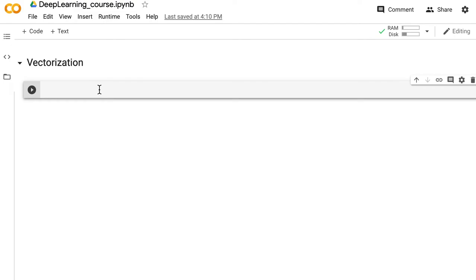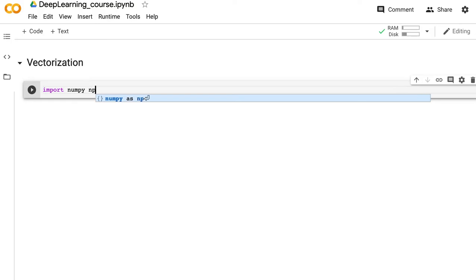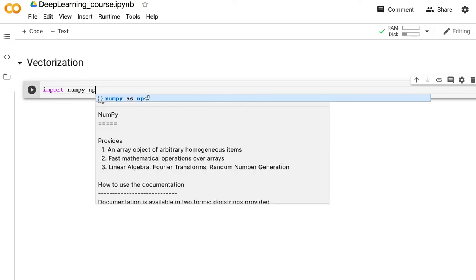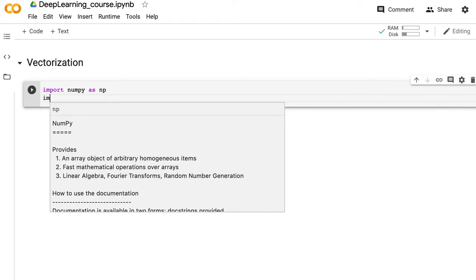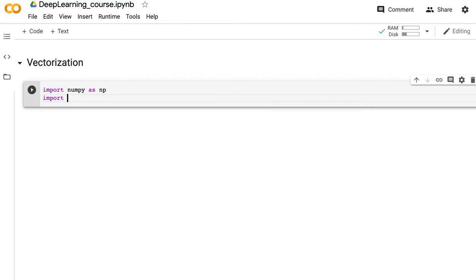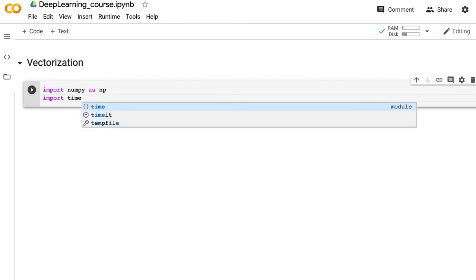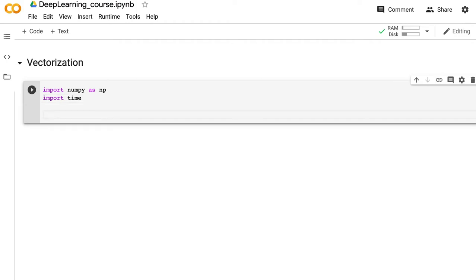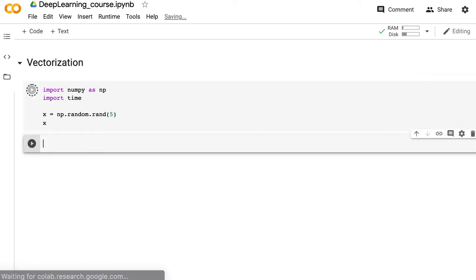First, we import NumPy as np. We will also record the time each method takes. We create x using np.random.rand. Let's first see what this rand function does by passing it the value 5.